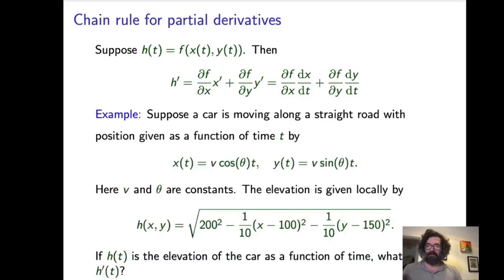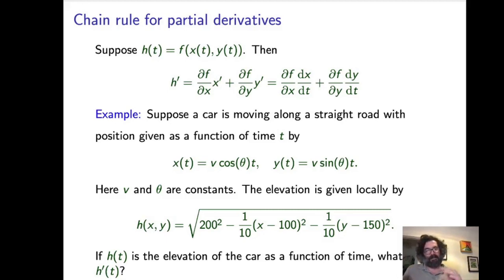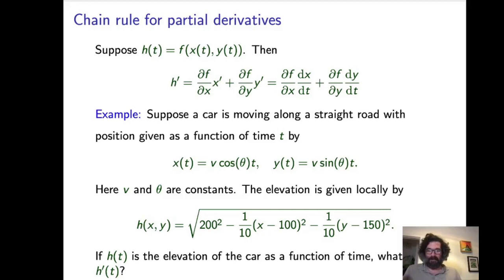We covered this in the videos for this week. In this review session example, we have a car moving along a straight road. Its position as a function of time T is given by these formulas. V here is the velocity or speed the car is moving. Cosine θ and sine θ — where θ is the angle the road makes with the positive X-axis — and T is time. The X position is V·cos(θ)·T and the Y position is V·sin(θ)·T. The velocity V and angle θ are assumed constant, so the car moves along a straight road at constant speed.